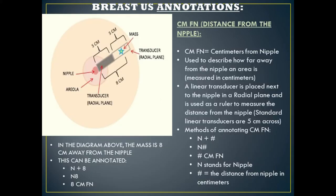Centimeters from nipple is our next method of breast ultrasound annotation, and this measures the distance from the nipple. We use the designation CMFN, which stands for centimeters from nipple, and we use a linear transducer as a ruler. You place the linear transducer next to the nipple in a radial plane. Most linear transducers are five centimeters across, and you use this transducer as a ruler to measure how far away from the nipple the mass is in centimeters.